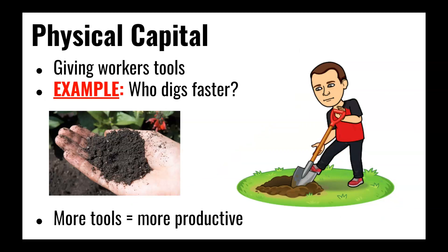Physical capital refers to the tools that workers need to do their jobs well. To think about physical capital, ask yourself: if you had to dig a hole, would it be better to dig by hand or to get a shovel? Intuitively we understand that the tool helps us do things more quickly. With the same number of workers and the same amount of time, we can produce a whole lot more work when provided with tools. So the more capital available in an economy, the more productive it will become.